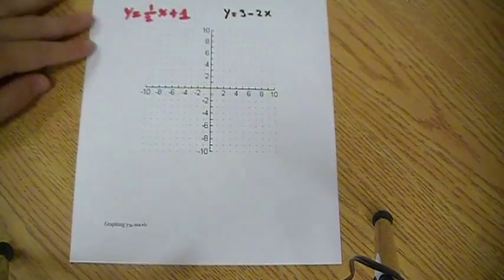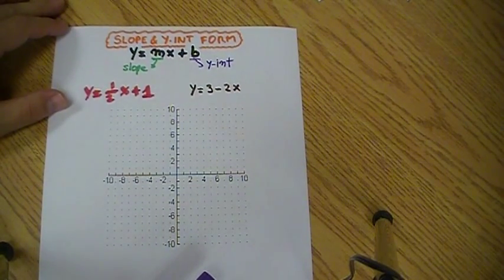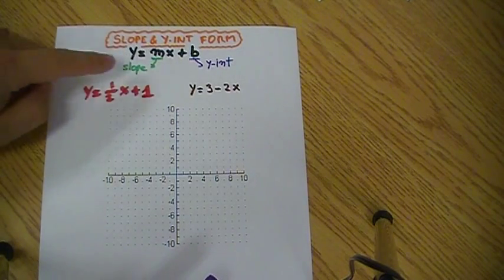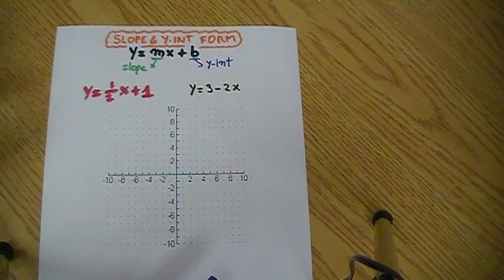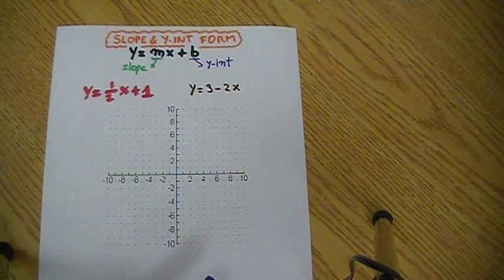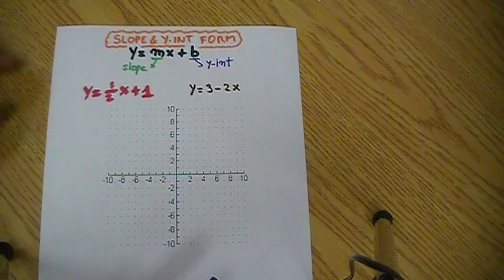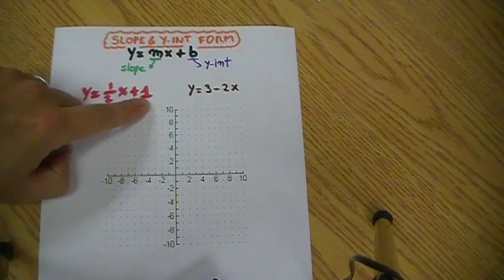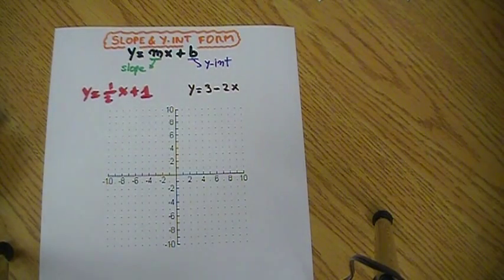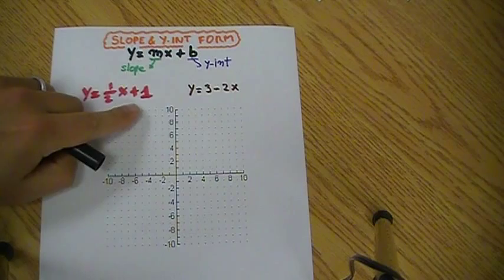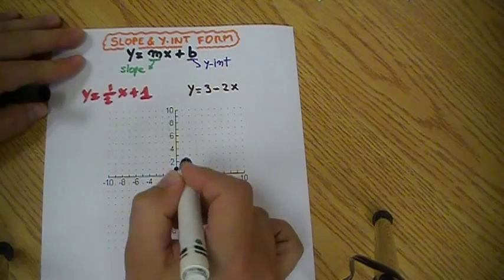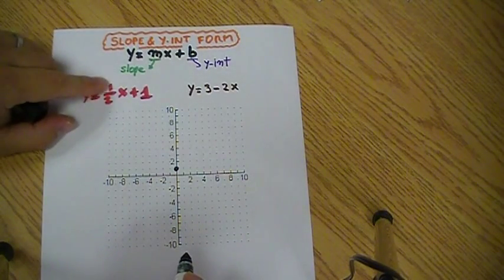This is where we go to slope and y-intercept form. How do we graph y equals mx plus b? M is the slope, and b is the y-intercept. What is the y-intercept? It's where the line crosses the y, the vertical axis. Therefore, in this case, the slope is one half and the y-intercept is plus one. We start with that plus one at the y-intercept.